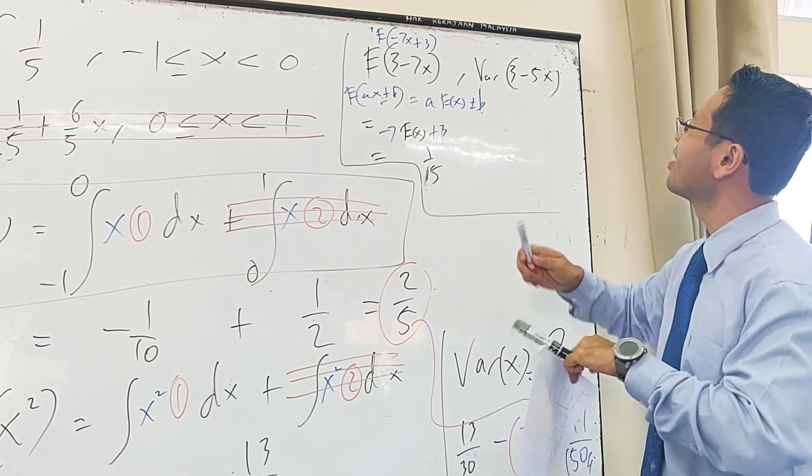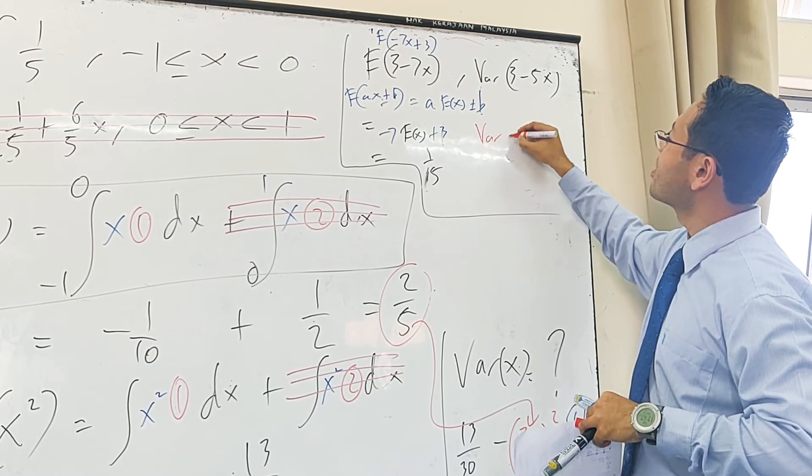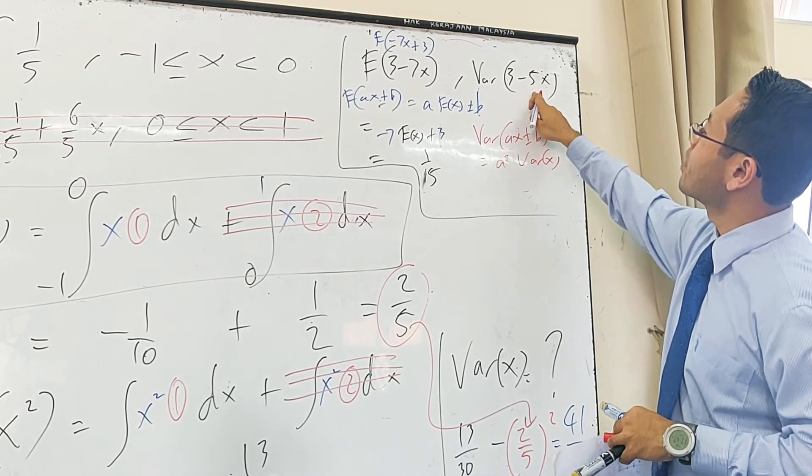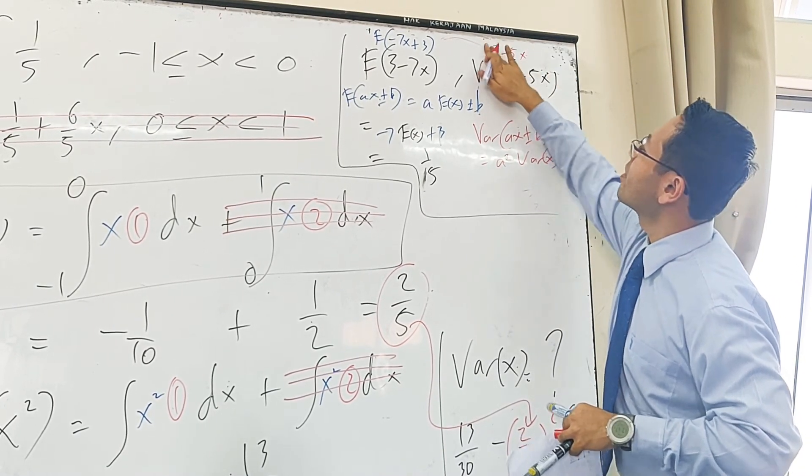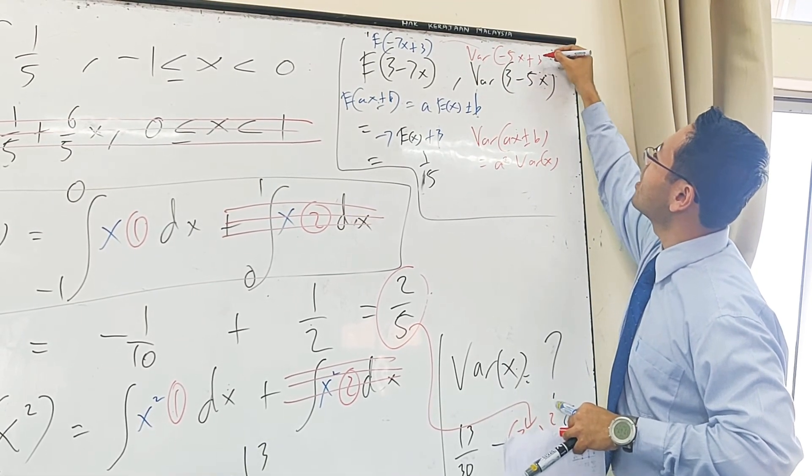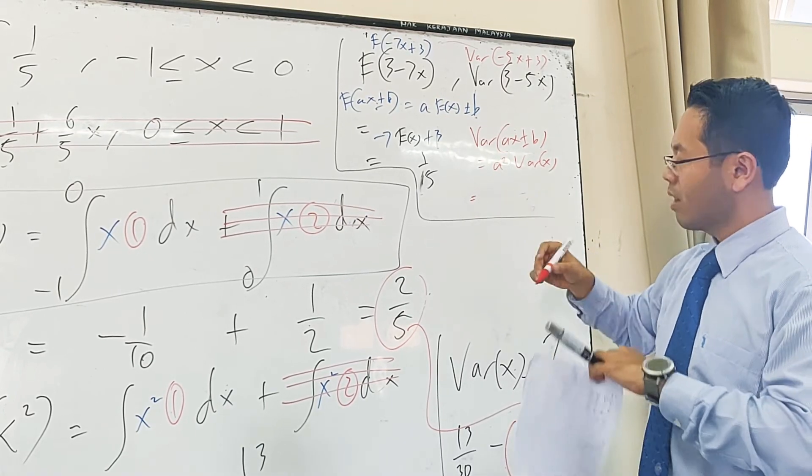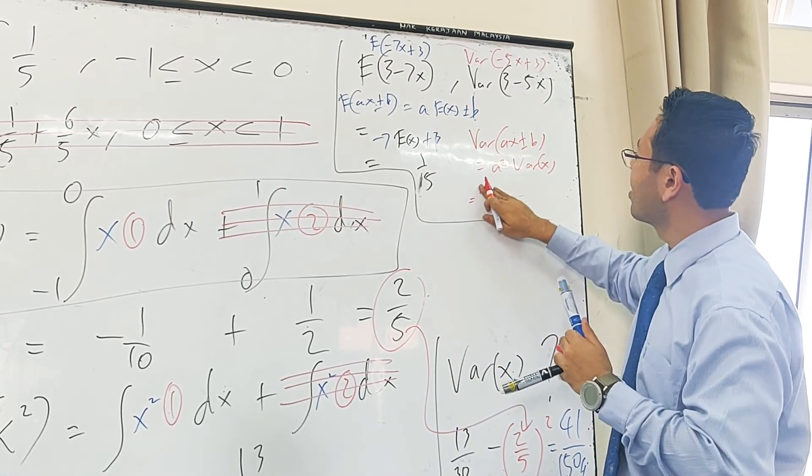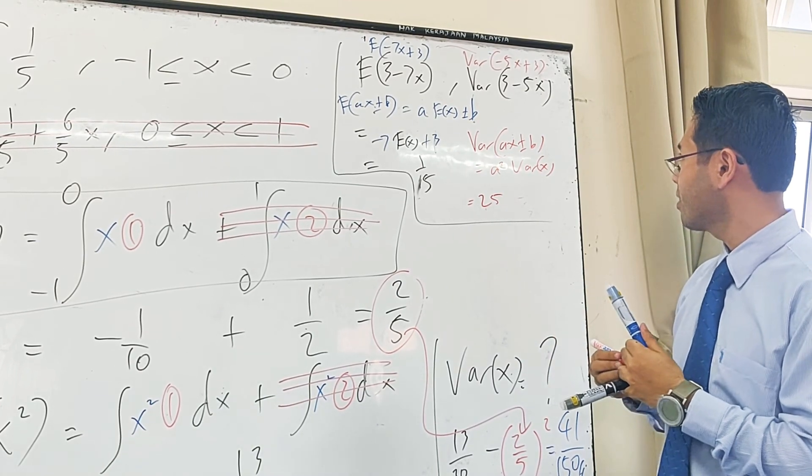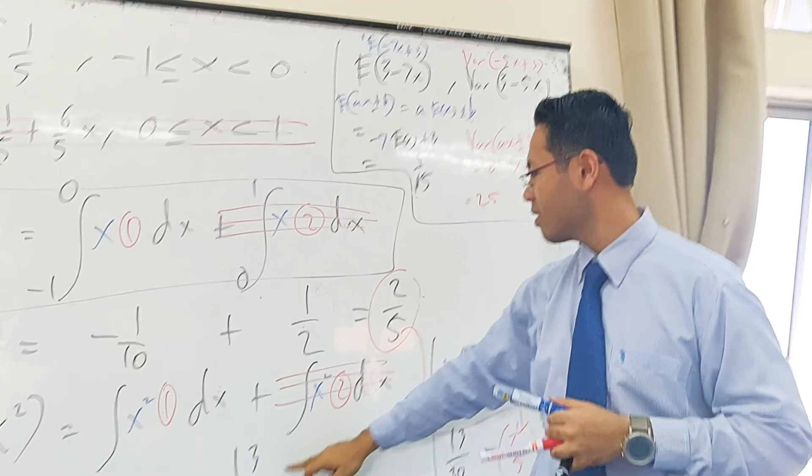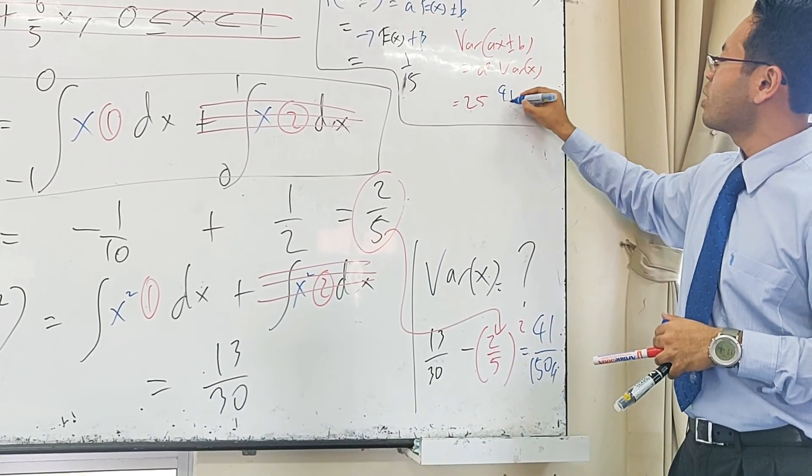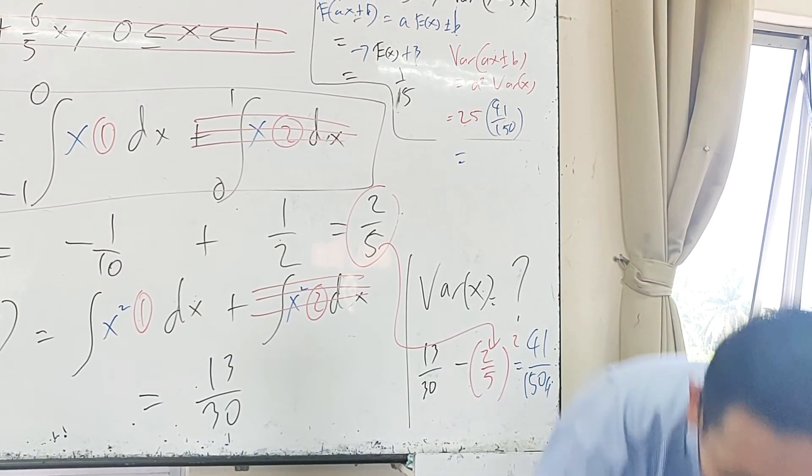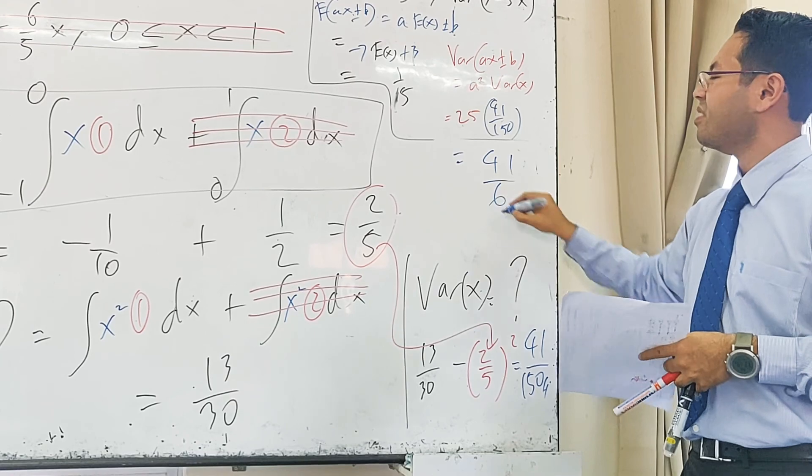Me use Var(aX + b), which you get yourself a² · Var(X). This one actually difficult for you to read. Let's rearrange them: -5X + 3. So this one becomes negative 5, negative 5 squared is 25, 25 times Var(X). Var(X), sorry, this one here, 41 over 150. 41 over 6. This is the easy one.